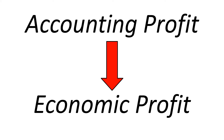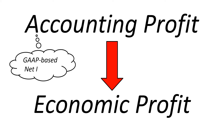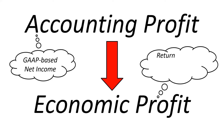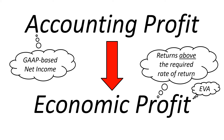With Accounting Profit, you look at metrics like GAAP-based net income. With Economic Profit, you look at the returns generated above the required rate of return. Economic Profit is the tougher way to measure — it sets the bar higher. Economic Value Added is one of the ways to measure Economic Profit, and was developed and copyrighted by Stern Stewart and Company.